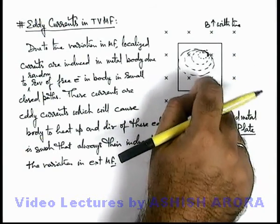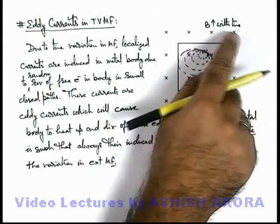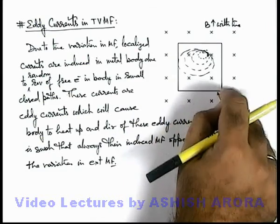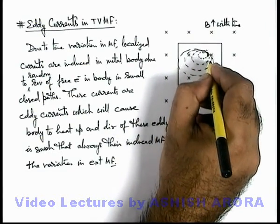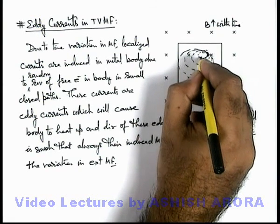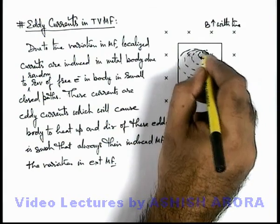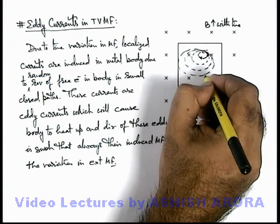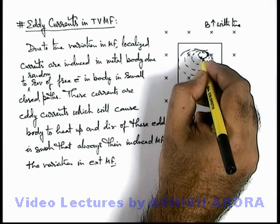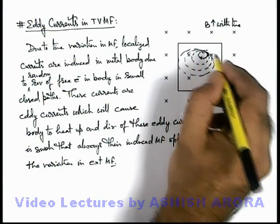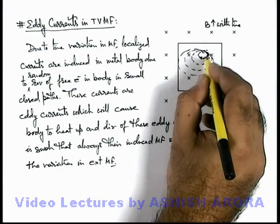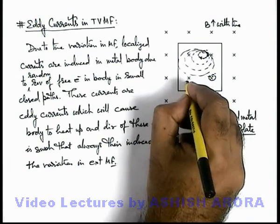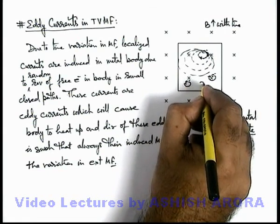You can understand this better by considering a coil placed here — if the magnetic field increases with time, an anticlockwise current is induced to oppose the external variation in magnetic field. Out of the several paths available, electrons automatically choose the smaller paths because in a larger path the resistance of the metal body for electron motion is more, while in a smaller path it is less. Current always chooses the low-resistance path for its motion.